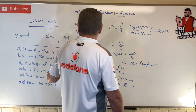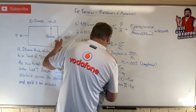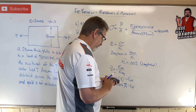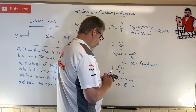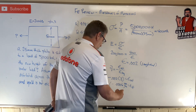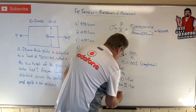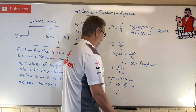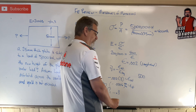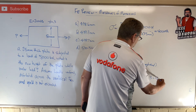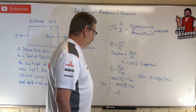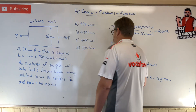If the lateral strain is negative 0.0006 mm/mm, and I have 500 millimeters in that direction, then the change is negative 0.0006 times 500, which equals negative 0.3 millimeters. It started at 500, and with a delta of negative 0.3, the new height is 500 minus 0.3 equals 499.7 millimeters.